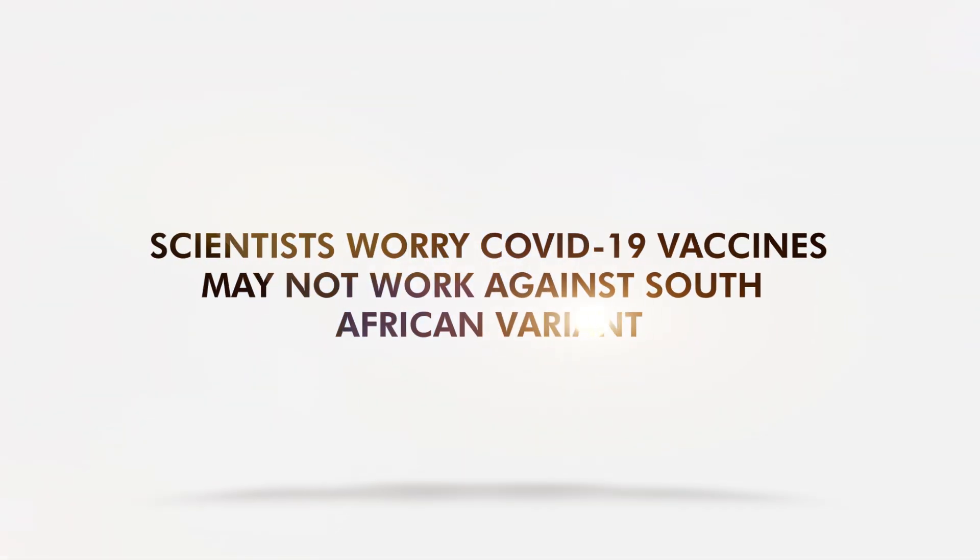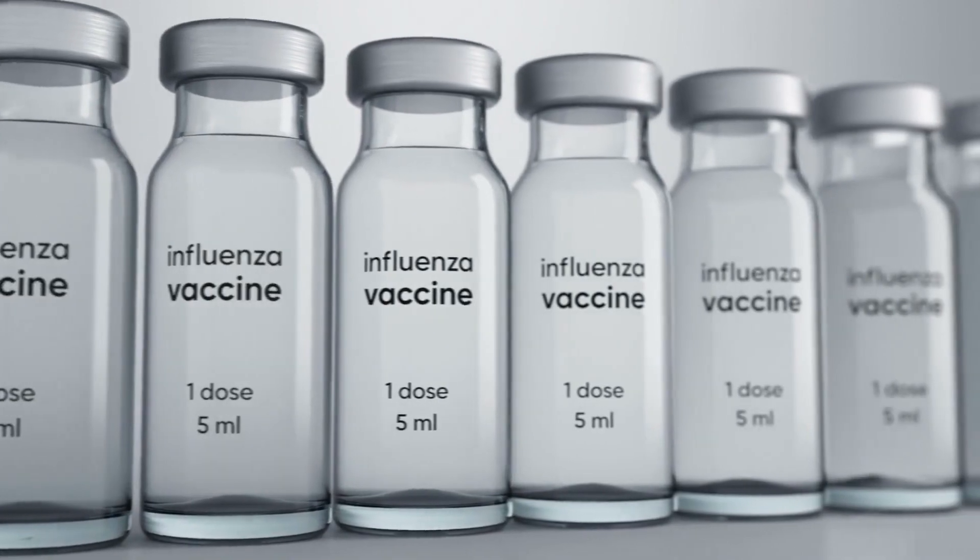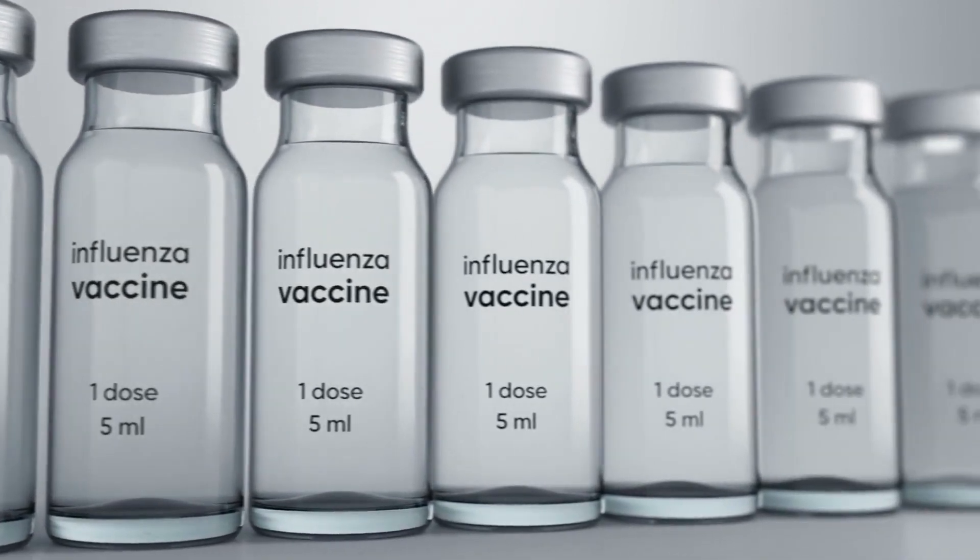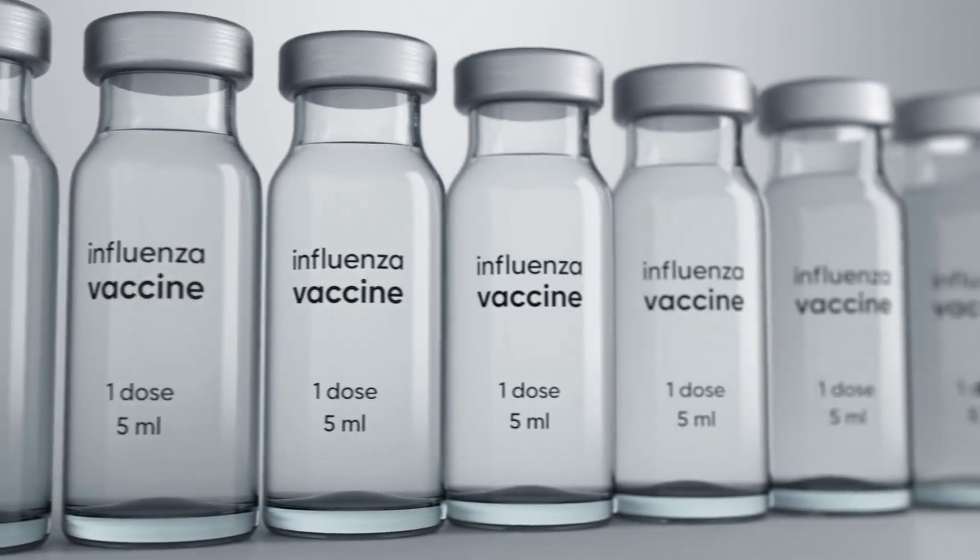Scientists worry COVID-19 vaccines may not work against South African variant. Three vaccines with emergency use authorization and two COVID-19 variants are facing off in the first quarter of 2021. Between the UK and South African variants, experts are worried if the vaccines will work against the latter.